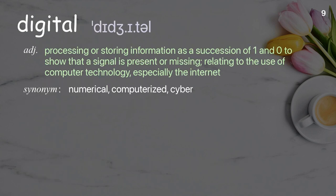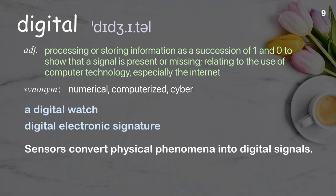Digital: Processing or storing information as a succession of ones and zeros to show that a signal is present or missing; relating to the use of computer technology, especially the internet. Examples: A digital watch. Digital electronic signature. Sensors convert physical phenomena into digital signals.